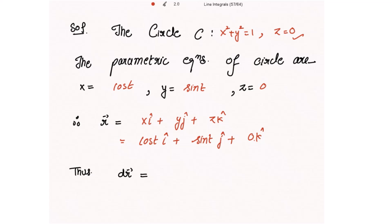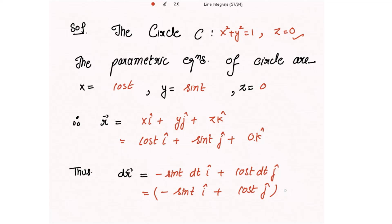Now differentiating this r vector with respect to t, we get -sin(t)dt î + cos(t)dt ĵ, since the z component is 0. Writing this further as (-sin(t)î + cos(t)ĵ) dt, taking dt outside the bracket.